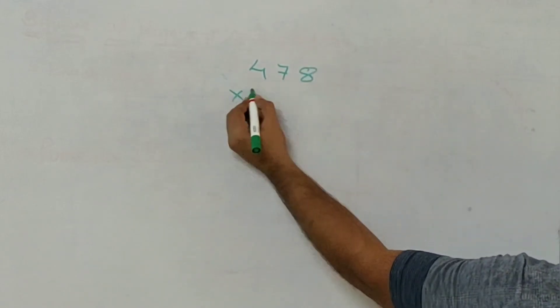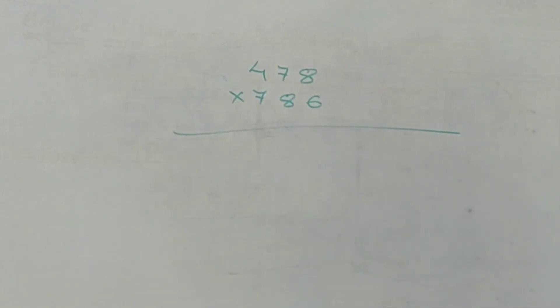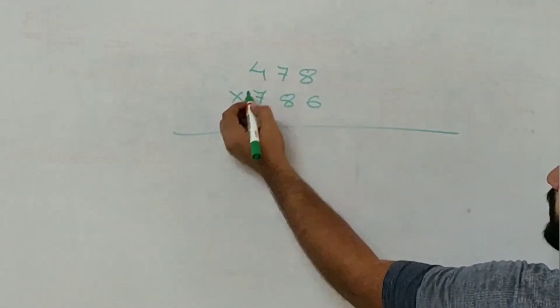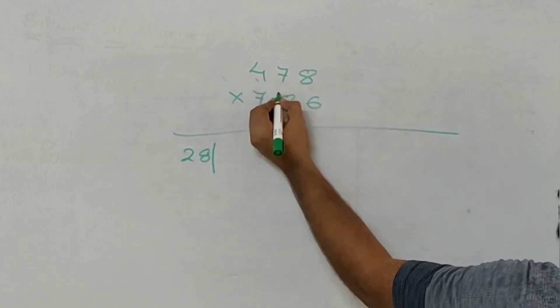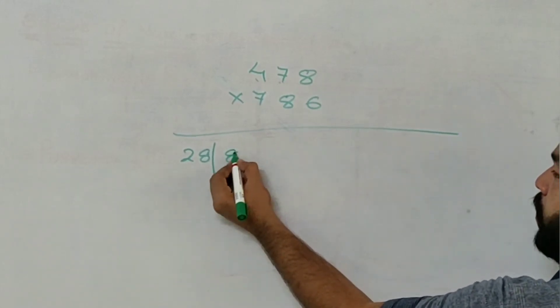Let us see another example, 478 into 786. I will try to solve it in less time as possible. So 4 and 7 will be the first group which gives me 28. 4 into 8 is 32, 32 plus 7, 7 is 49, 49 plus 32 gives me 81.